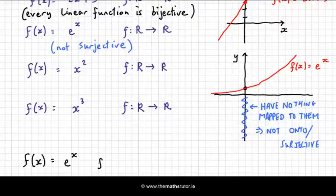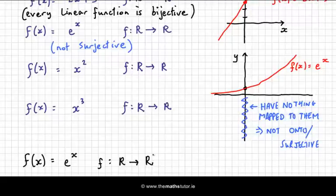and this time it's f from reals to just the positive reals, well, this time everything in our co-domain has got something mapped onto it. So this is a bijection.